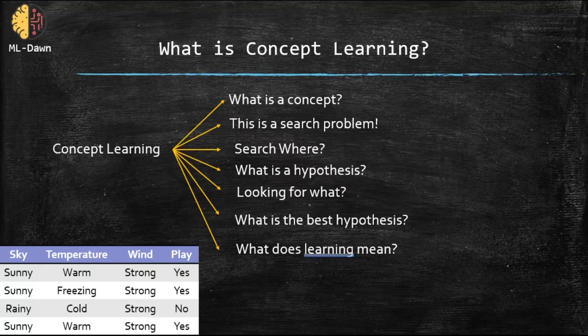And in concept learning, the machine tries to search the whole space of hypotheses and look at all the possibilities out there. And for what? Because it wants to find the best hypothesis.